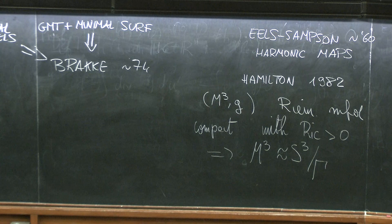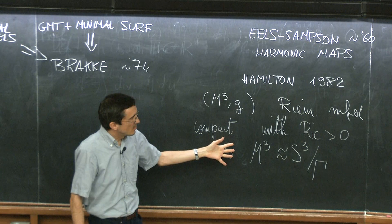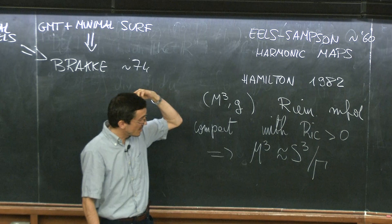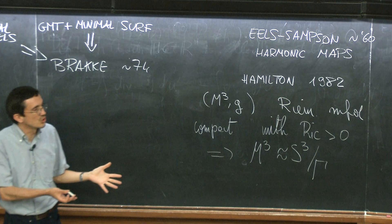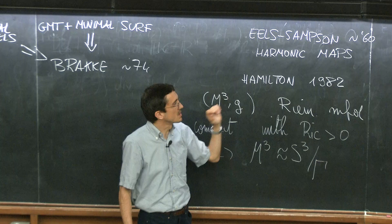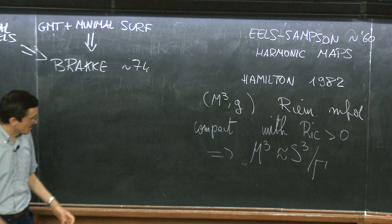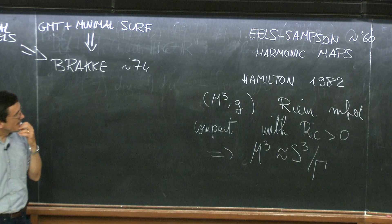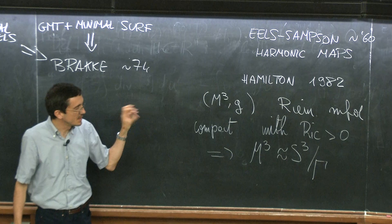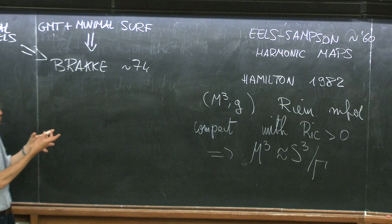These ideas were carried further in the following decades. Ricci flow has been used to prove the Poincaré conjecture — a program started by Hamilton and then carried to a conclusion by Perelman — and also the differentiable sphere theorem by Brendle and Schoen. In the next lectures I will talk about this technique because what we will see is a kind of analog of it for mean curvature flow.